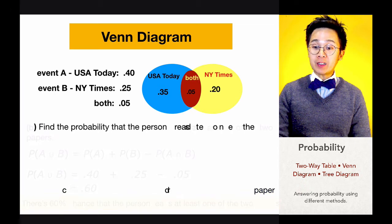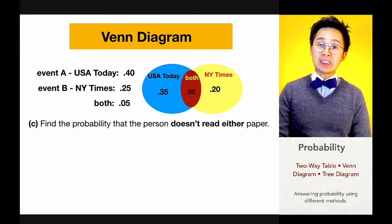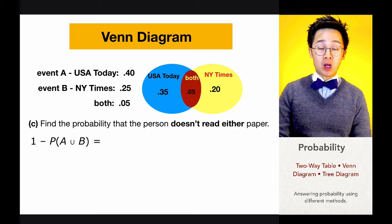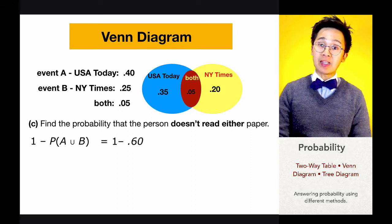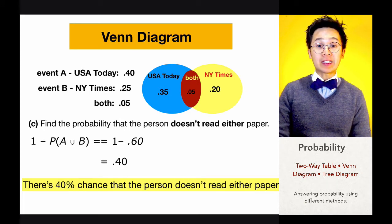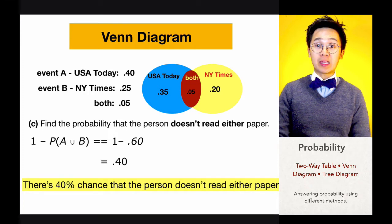For part C, we need the probability that a person doesn't read either newspaper. Since we already know 60% read at least one, we simply take the complement: 1 − 0.60 = 0.40. So there is a 40% probability that a person reads neither the New York Times nor USA Today.